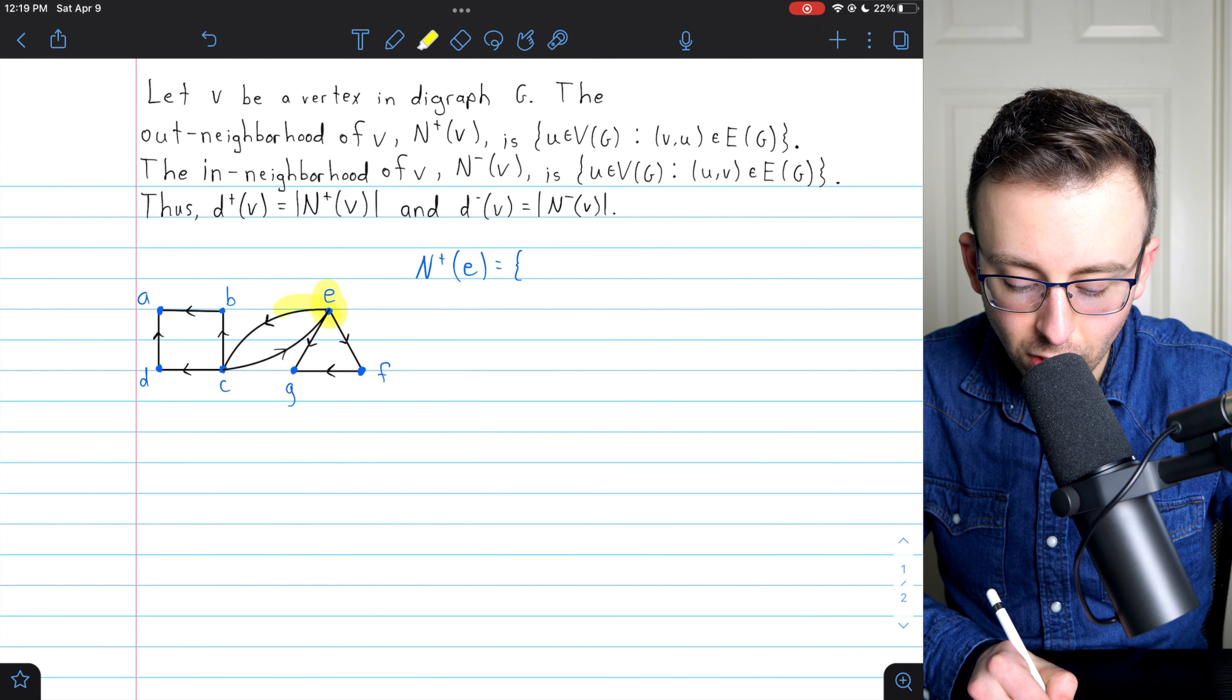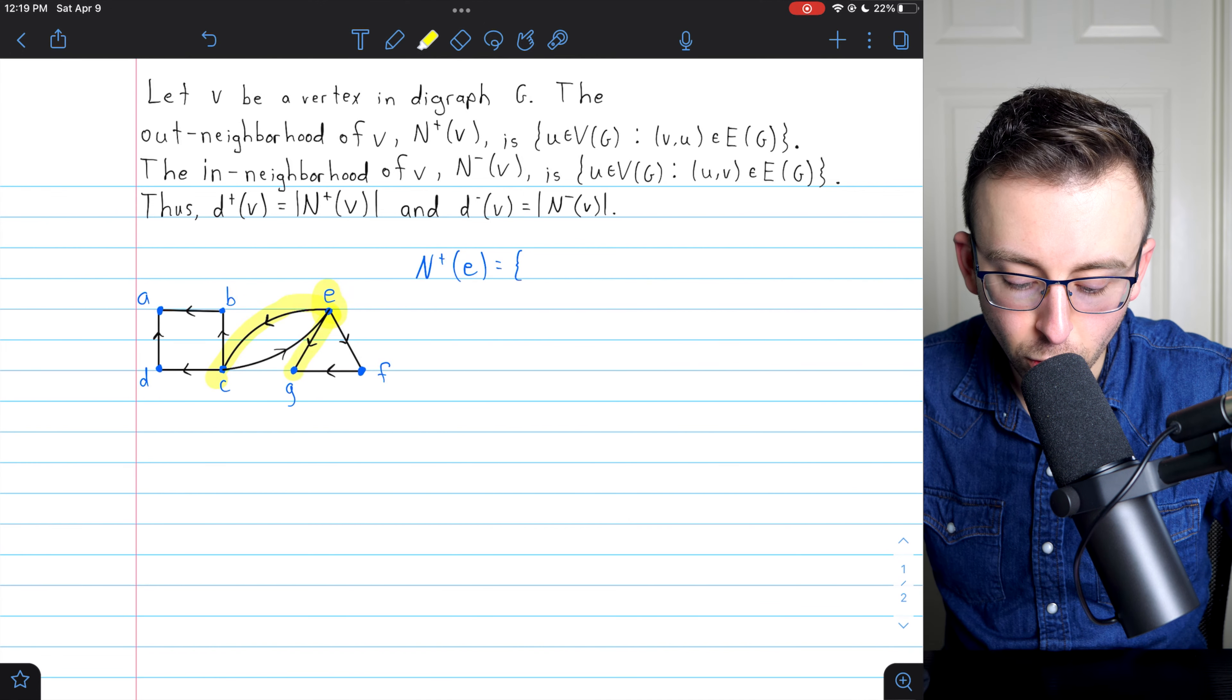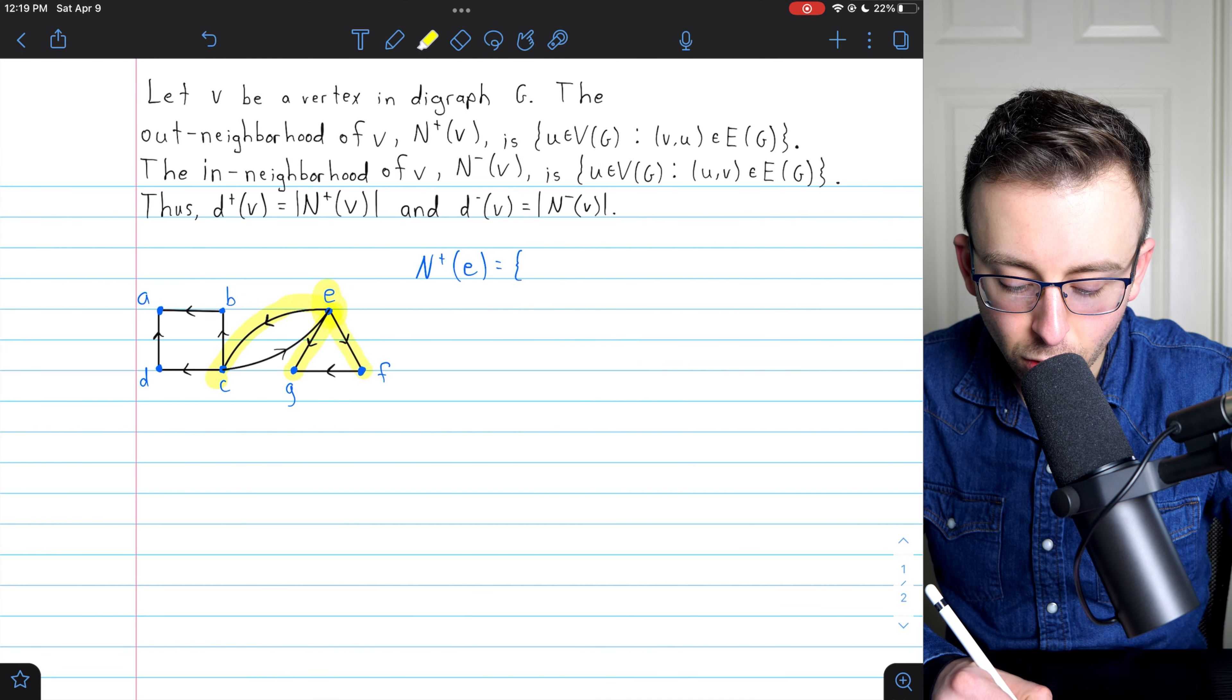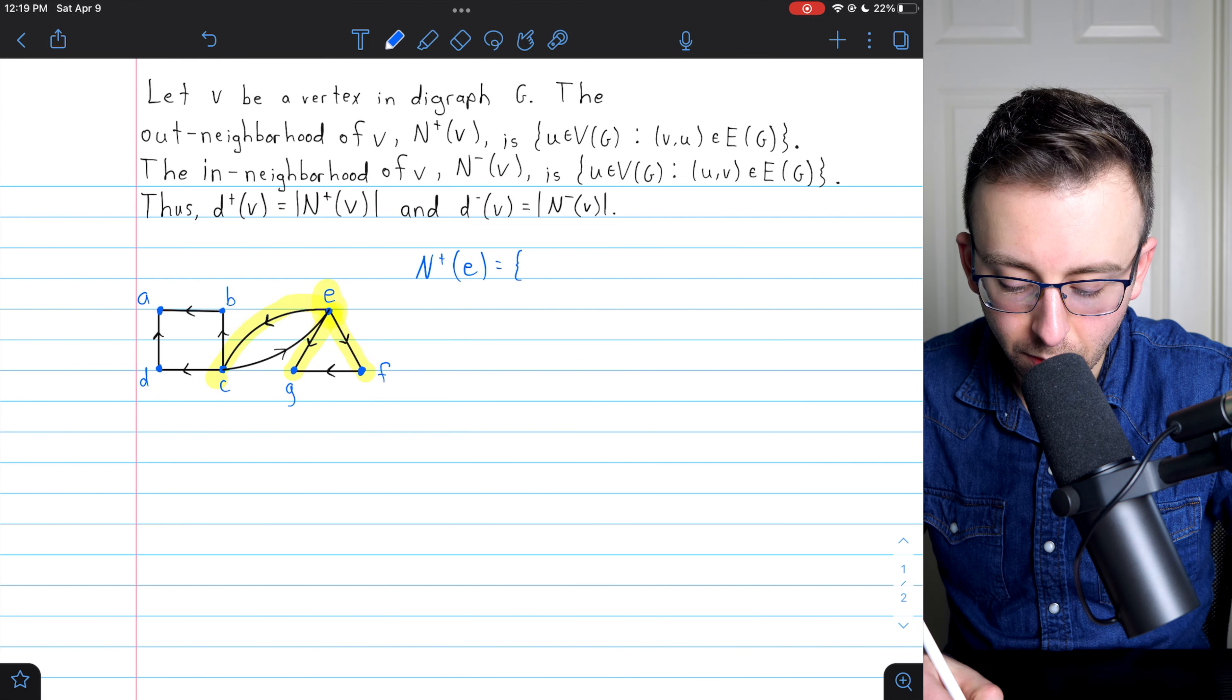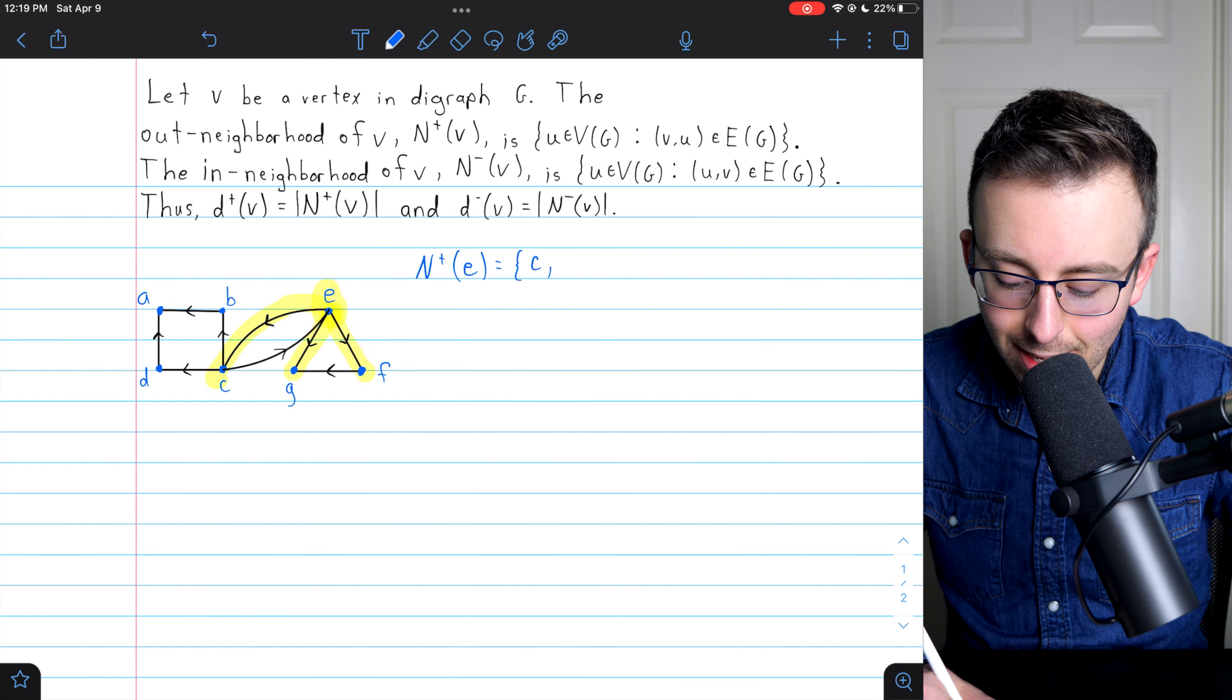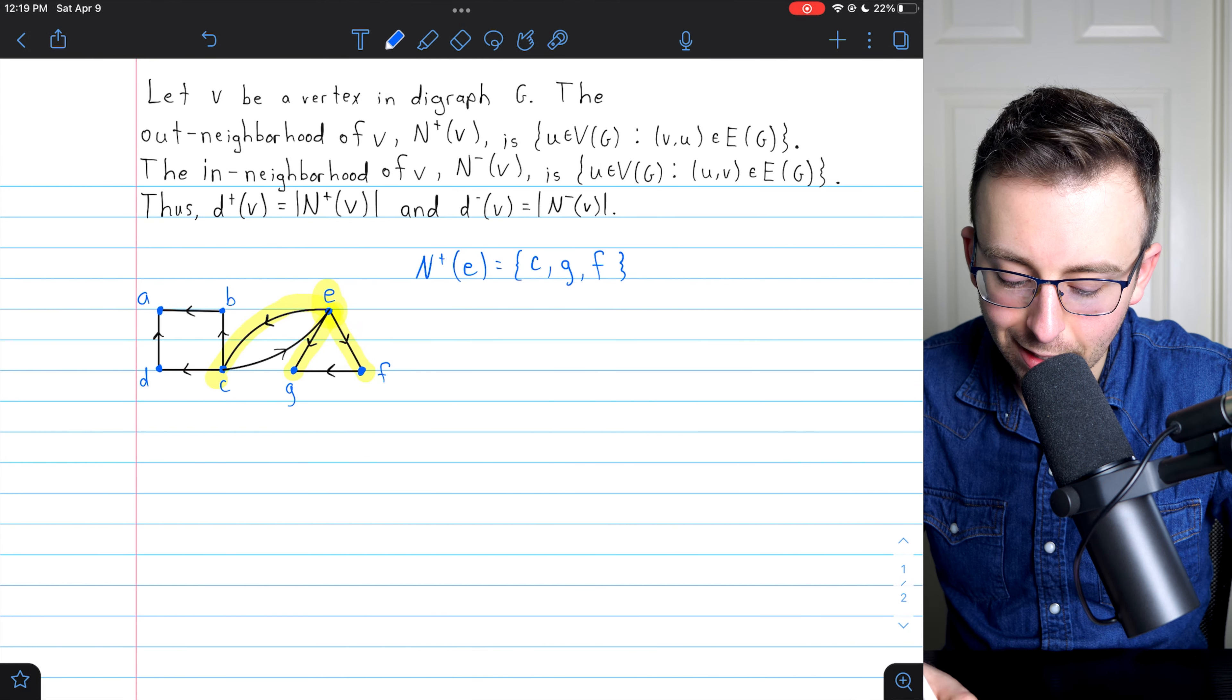Well, it's adjacent to C, it's adjacent to G, and it's adjacent to F. So the out-neighborhood of E is the set containing C, G, and F. That's three vertices.